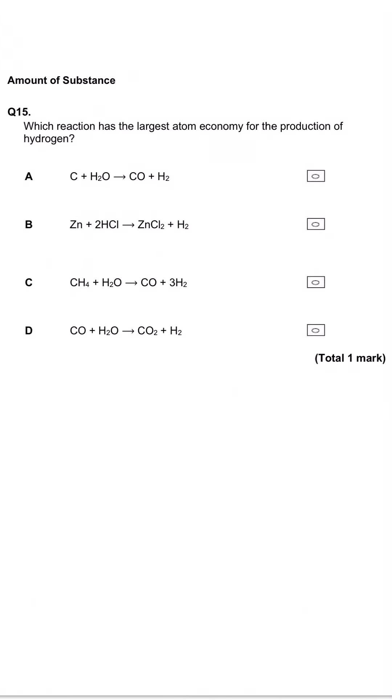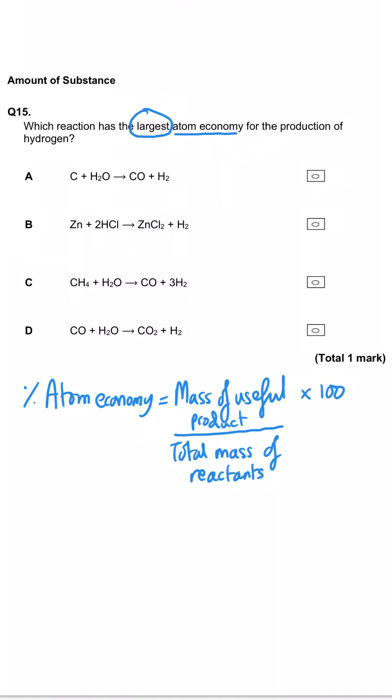Here we're being asked which of the following reactions has the largest atom economy for the production of hydrogen. Percentage atom economy can be calculated by dividing the total mass of useful products by the total mass of the reactants and multiplying by 100. This question is luring you in to thinking you need to calculate all of these percentage atom economies. You could, but that would take far longer than the minute per question.